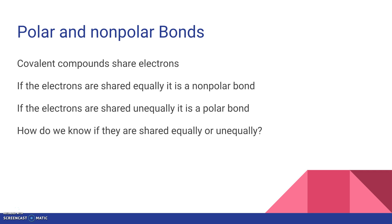We've talked about this a little bit before in class when we had the popsicle sticks. If you have covalent compounds, they can share electrons. If the electrons are shared equally, it is called a nonpolar bond. If the electrons are shared unequally, it is a polar bond. These are covalent compounds — ones between nonmetals and nonmetals.